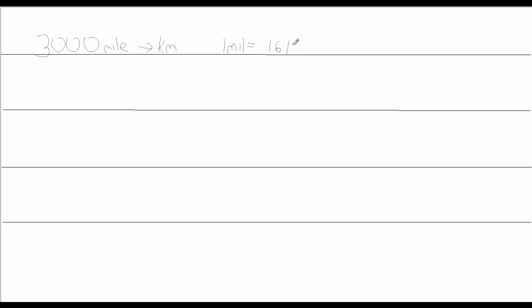Let's start off by doing some distance conversions. If we were to convert 3,000 miles to kilometers, I'm aware of the conversion that 1 mile is equal to about 1.6 kilometers. There may be a more accurate conversion, but this is close enough for the purposes of showing you the process of conversion.